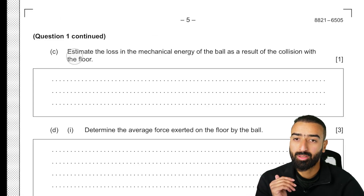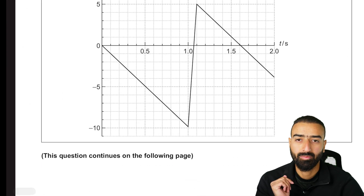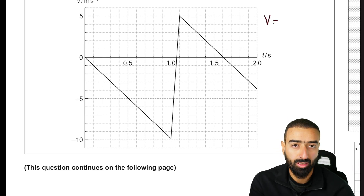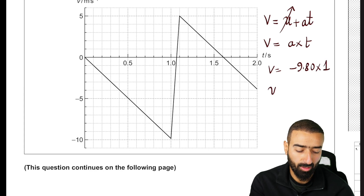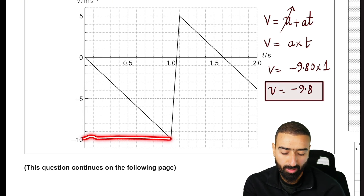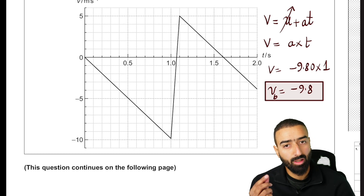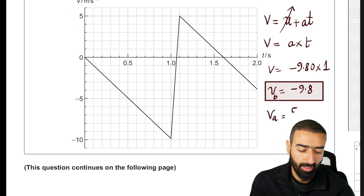Part C asks us to estimate the loss in mechanical energy of the ball as a result of the collision with the floor. The velocity just before hitting the floor is found using v equals u plus at: with u equals 0, acceleration minus 9.80, and time 1 second, the velocity before collision is minus 9.8 meters per second. The velocity after rebound, read from the graph, is 5 meters per second.